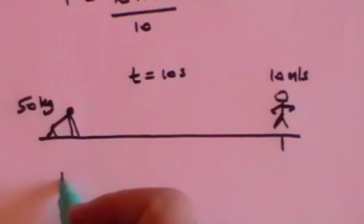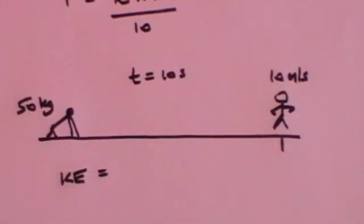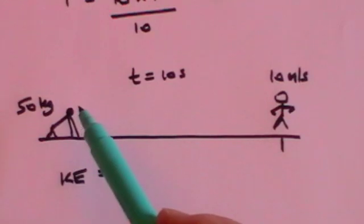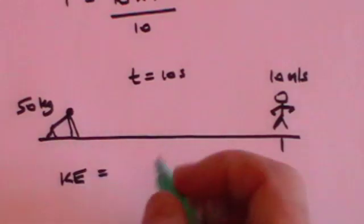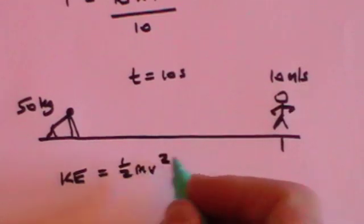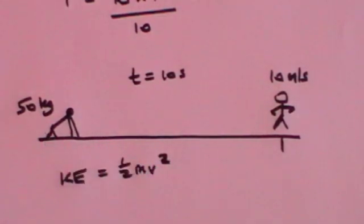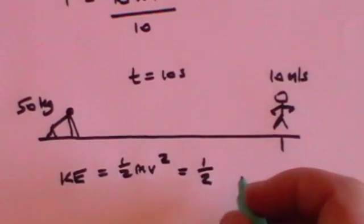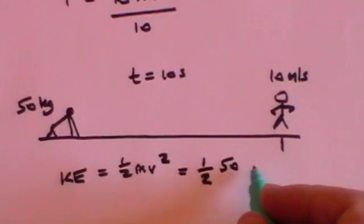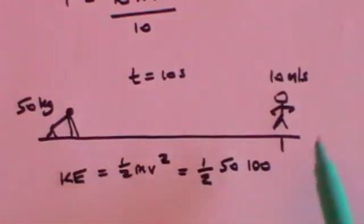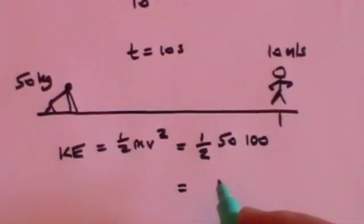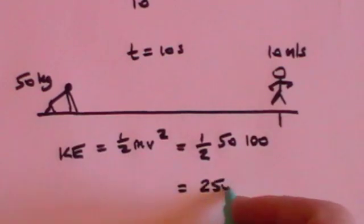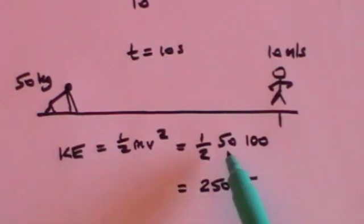We start by working out the kinetic energy. Remember when you start, the kinetic energy is zero because you're not moving. Kinetic energy is half mv squared, so if your velocity is zero, your kinetic energy is zero. But at the end, you'll be travelling at 10 metres per second, which means your kinetic energy will be half times 50 times v squared, which is 100. So your kinetic energy at the end will be 2,500 joules.